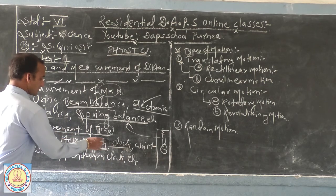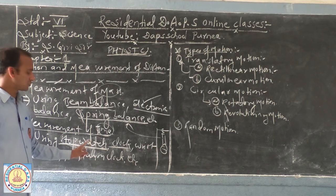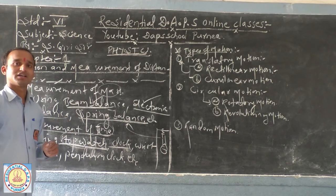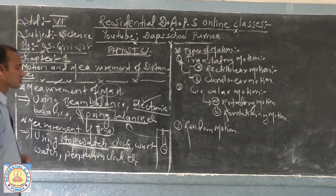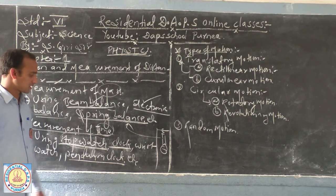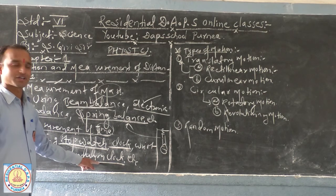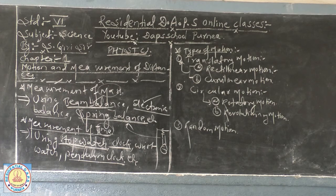You might have seen it — it is also available on mobiles, and also available on a clock or wrist watch. It is also hung on the wall and from that we get to know how much time, how many minutes, how many seconds have passed. So exactly we can measure mass using beam balance, electronic balance, spring balance, and if you want to measure time you have to use either a stopwatch, clock, wrist watch, or pendulum clock.